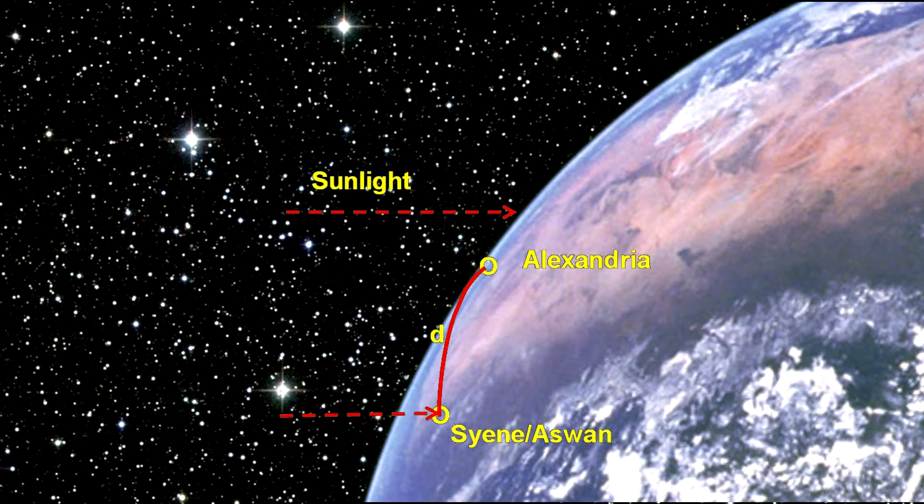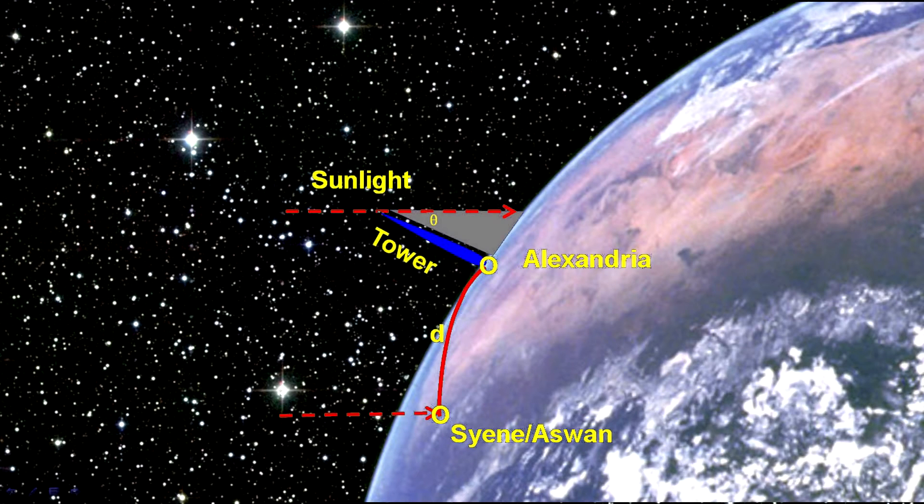Aristophanes knew that on the first day of summer, the Sun passed directly overhead at Syene. At midday of the same day, using a tower in Alexandria, he measured the angular displacement of the Sun from overhead. He found that the angular displacement was 7.2 degrees. That's approximately 1/50th of a circle.